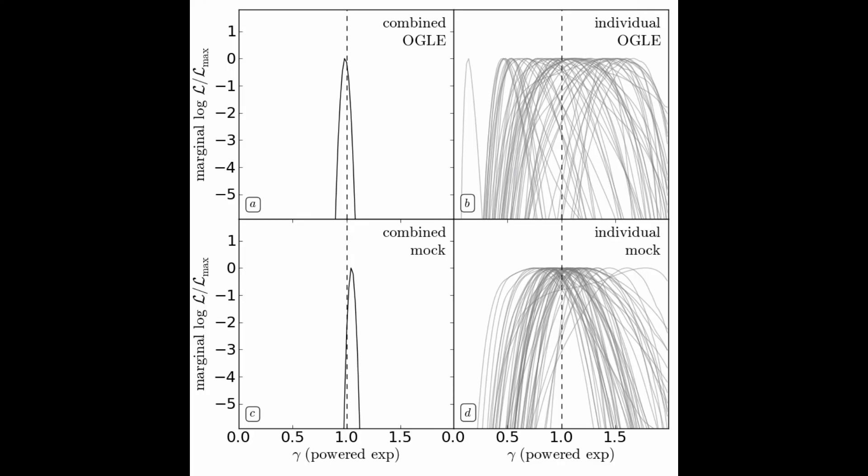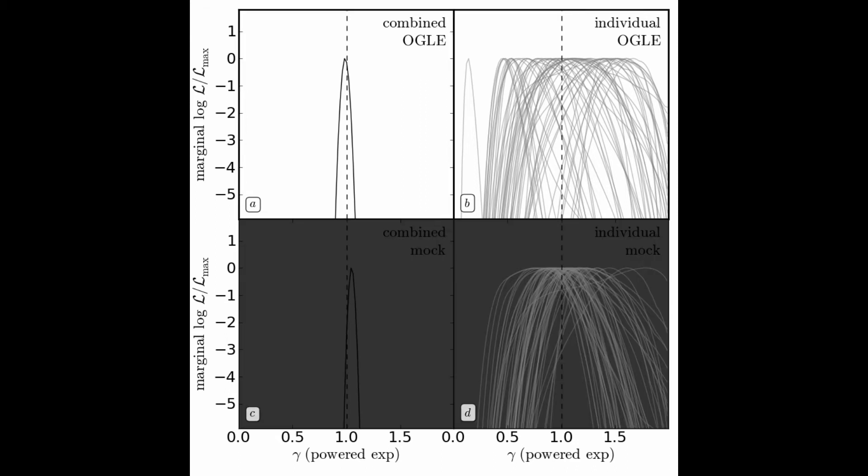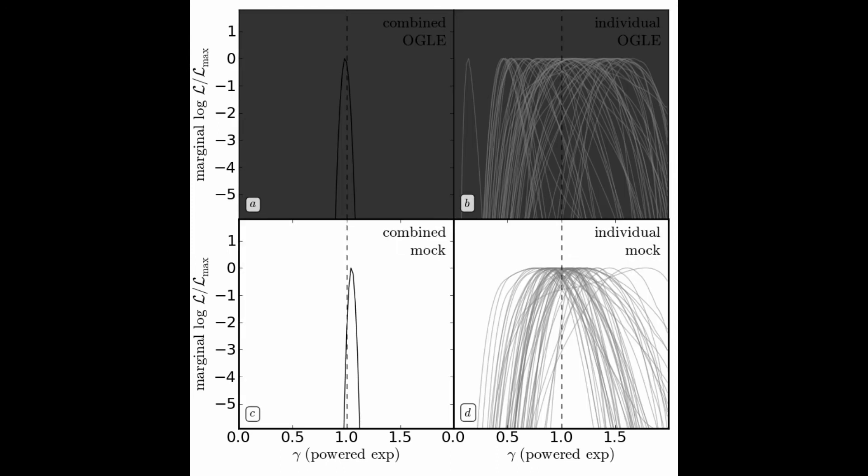Figure 2 in the paper shows the results for the powered exponential model. The top panels show the joint and individual likelihood functions of gamma for the OGLE light curves on the left and right respectively. The bottom panels show the joint and individual likelihoods for the mock data.